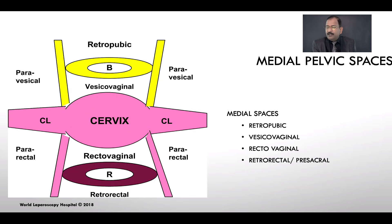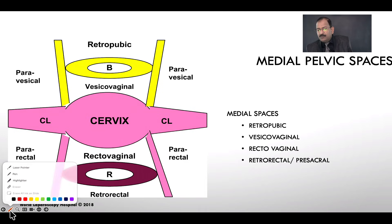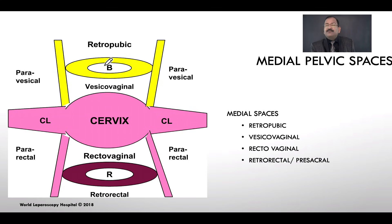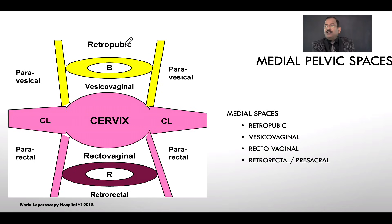We will discuss the medial space first, then the lateral space. The most important medial space is called the retropubic space, also called the prevesical space — it is in between the pubic symphysis and the bladder, also called the Space of Retzius. This space is very important for Burch suspension, radical prostatectomy, or severe bladder endometriosis surgery.